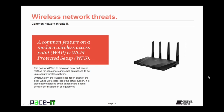It's time to move on to wireless network threats. A common feature on modern wireless access points is Wi-Fi Protected Setup, or WPS. The goal of WPS is to create an easy and secure method for consumers and small businesses to set up a secure wireless network. Unfortunately, the outcome has fallen short of the goal. While WPS does ease the setup burden, it is easily exploited by an attacker and should be disabled on all equipment. This exploit has been known for a couple of years, and equipment manufacturers still enable WPS by default, so when you set it up, you need to disable WPS.